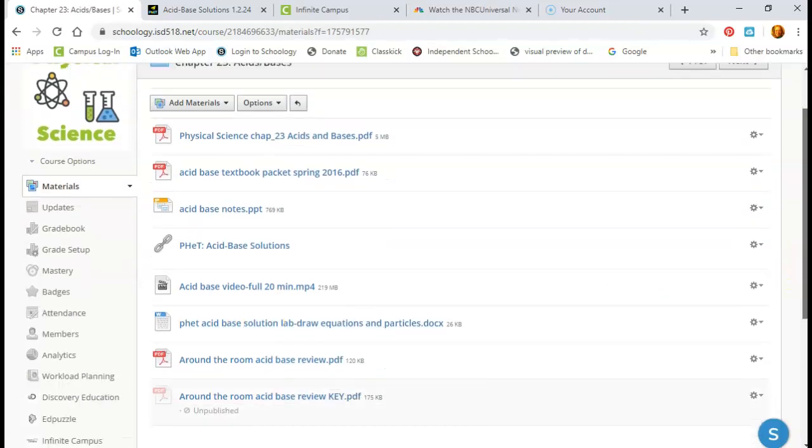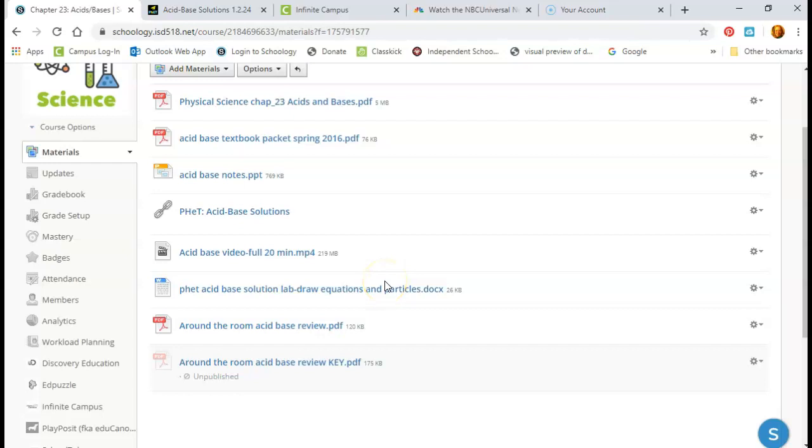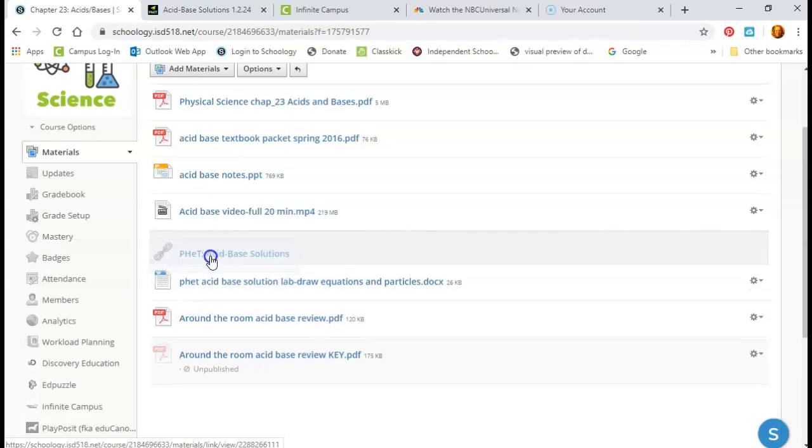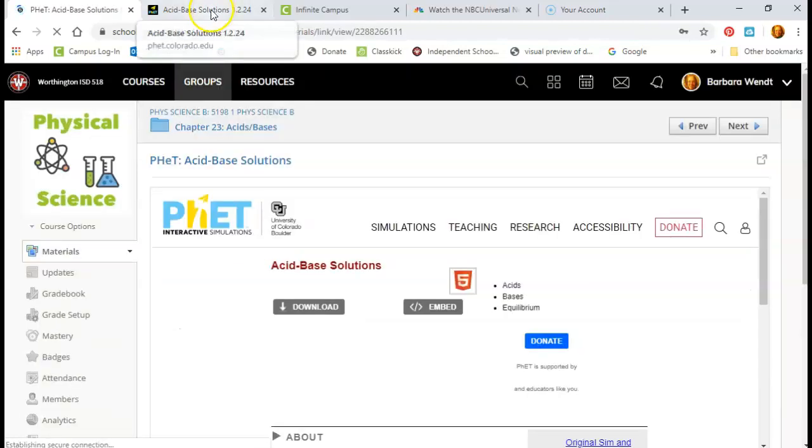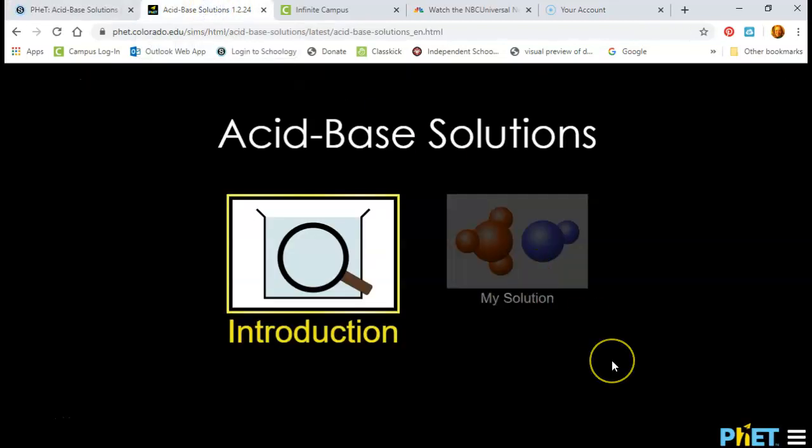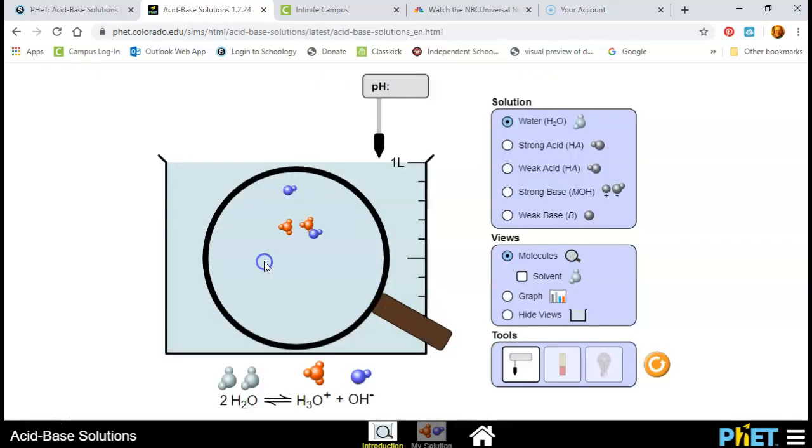So I've got the link for this on your Schoology page, so I'm going to go into Schoology, and here's all your acid-base stuff in there. And here is the paper copy, or I'm sorry, the electronic copy of this paper you got. It's a lot easier to do it on paper, I think, but it's there if you need it. And the link for it, right up here. So PHET Acid-Base Solutions. So if I open that link up, we come to this page.